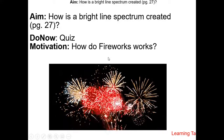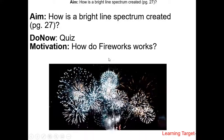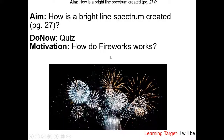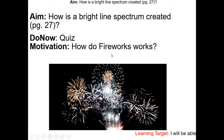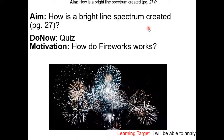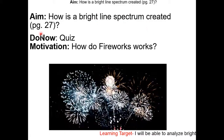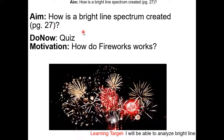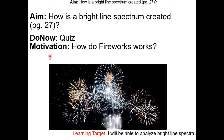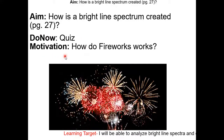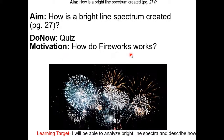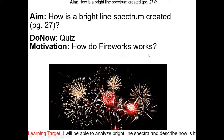This is my seventh video lesson for the unit atomic theory. We will be talking about the bright light spectrum. Go to page 27 in the class packet. For the motivation, I want you to think about how fireworks work.